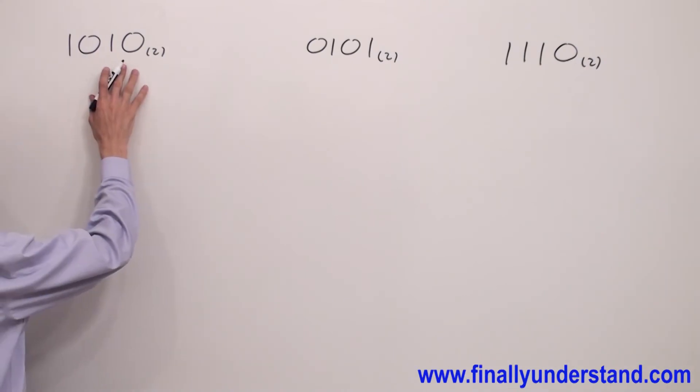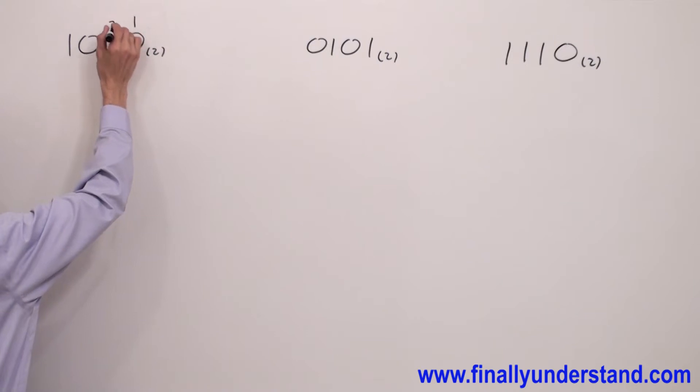Let's take a look at these examples. We have to convert the binary numbers to the decimals. What are you supposed to do first? Write the weight over every single bit.